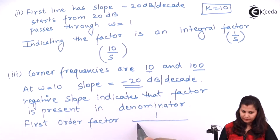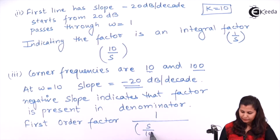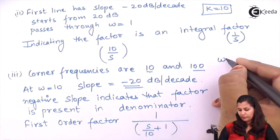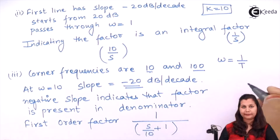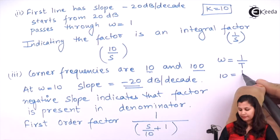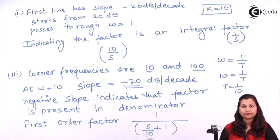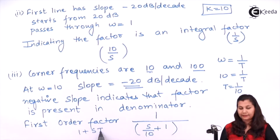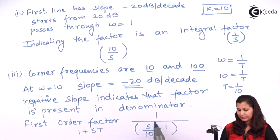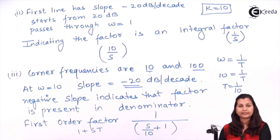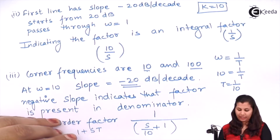The factor has corner frequency omega equals 10. Since omega equals 1/T, if omega is 10 then T is 1/10. We can write the factor in the form 1 + sT, so it will be 1 + s/10. Since it is present in the denominator, the factor is 1/(1 + s/10).